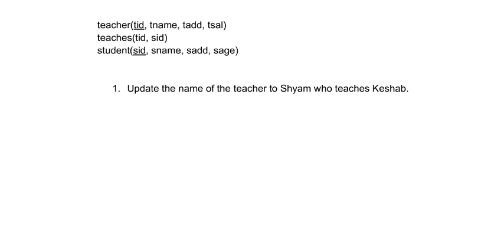This is a relational algebra question. A schema is given with three tables: teacher, teaches, and student. The question asks to update the name of the teacher to Sam who teaches K sub. To start, let's begin with simpler updates and go step by step. Suppose the question was just: update name of the teacher to Sam — let's ignore the condition for a while.